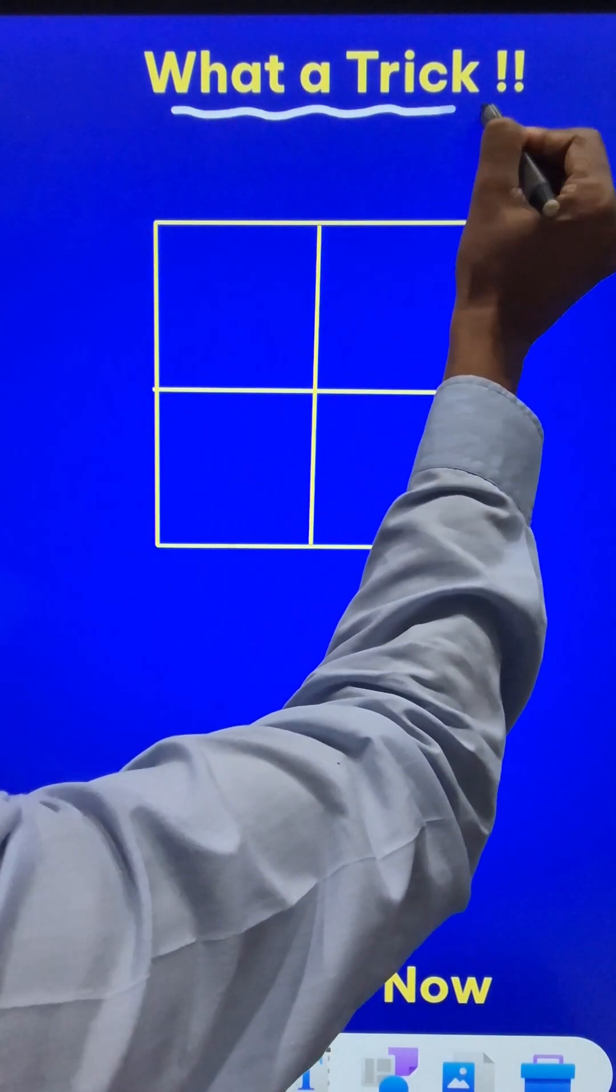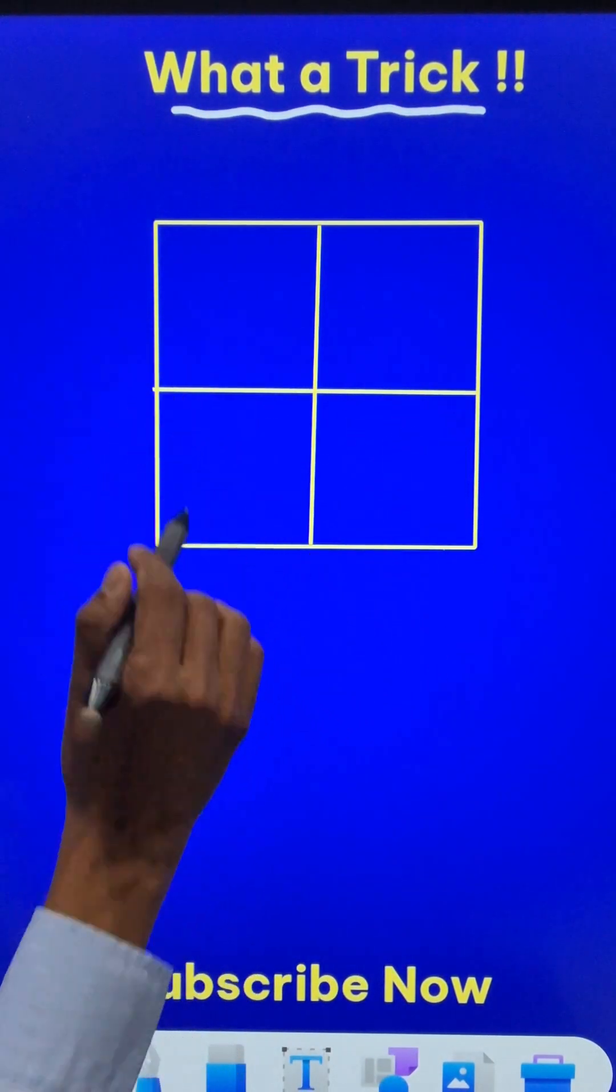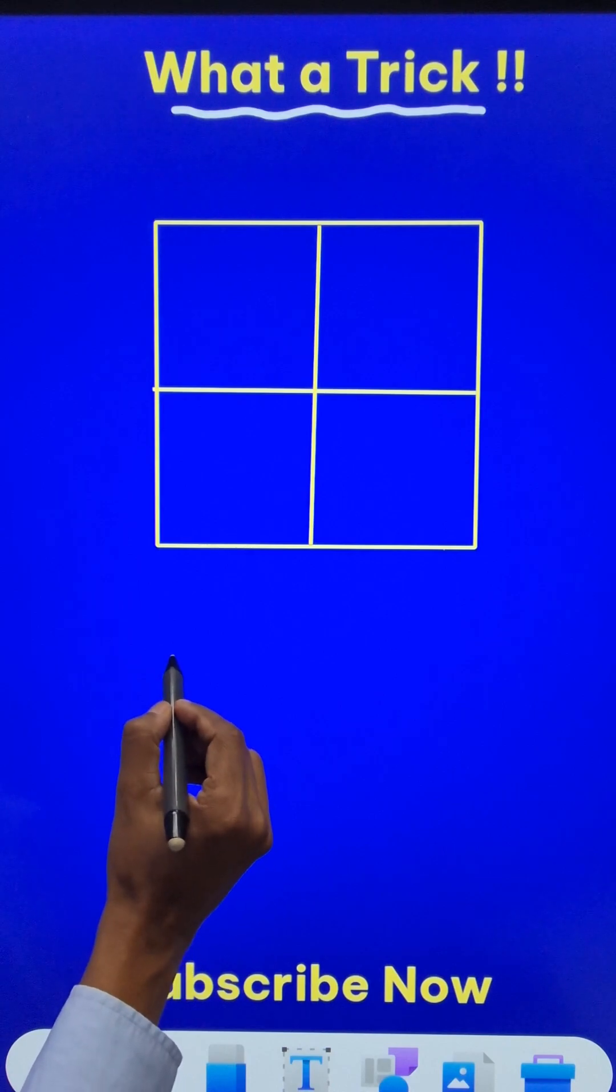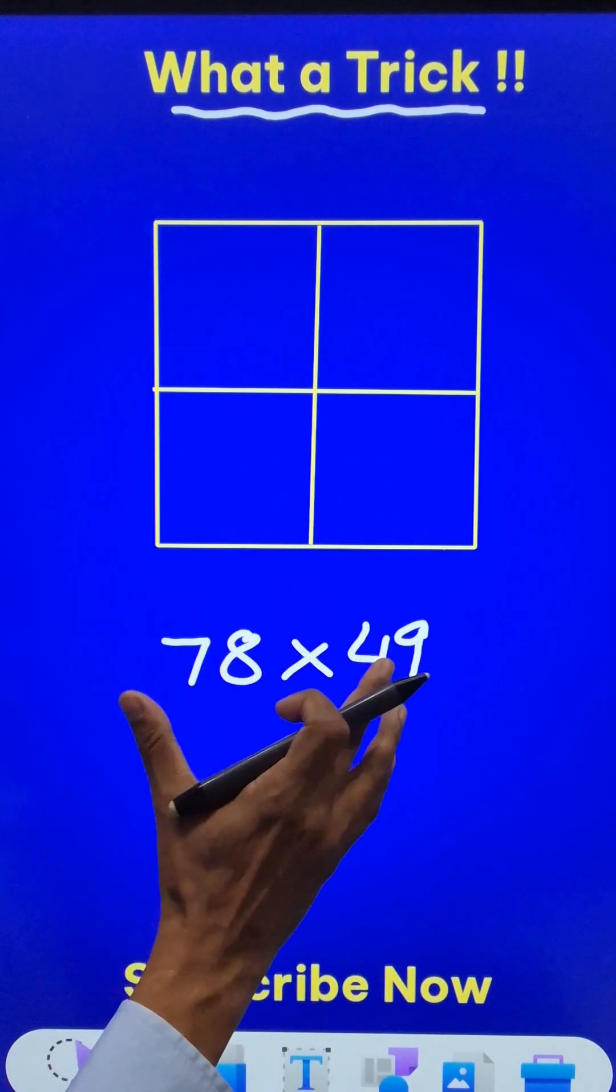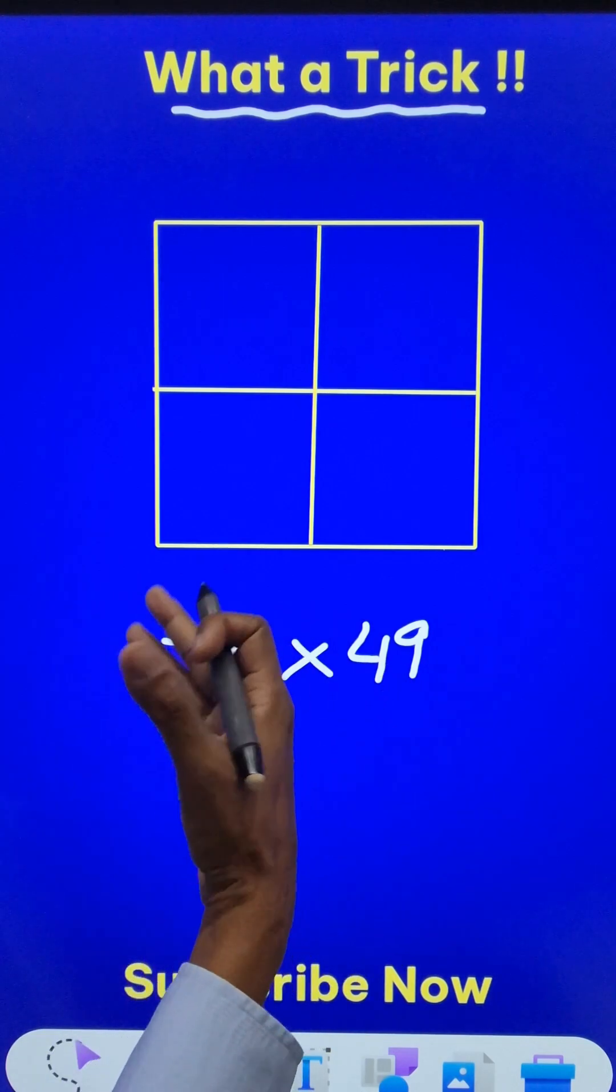Here is another amazing trick to multiply two-digit numbers. Suppose the question says we have to multiply 78 and 49. You can take any two different two-digit numbers, and even you can take the same number that we did with the square.